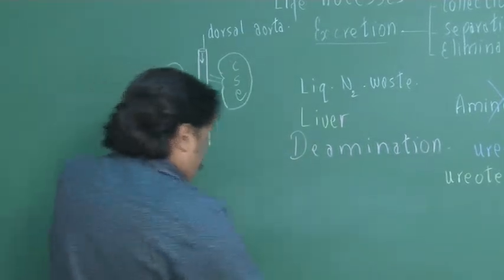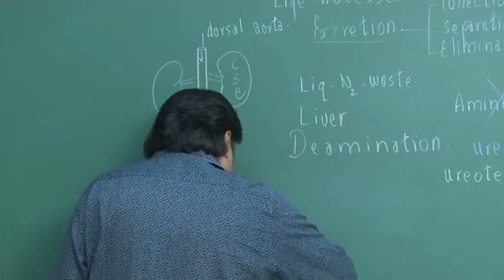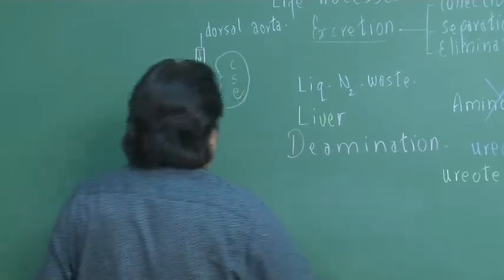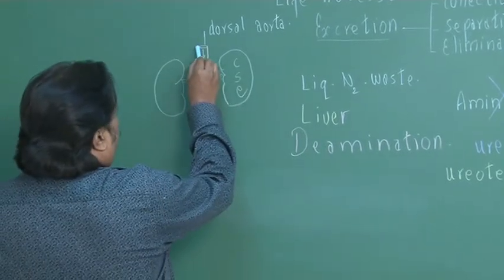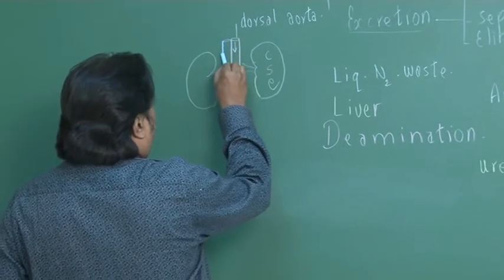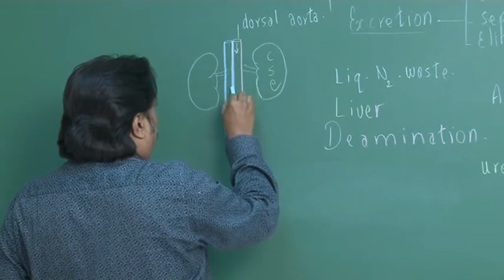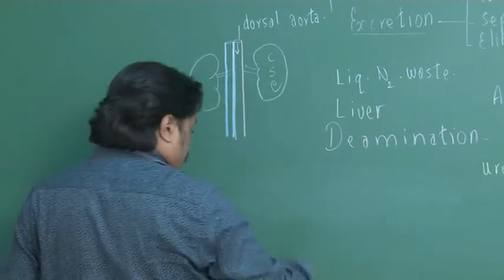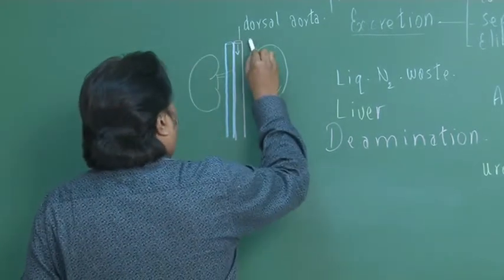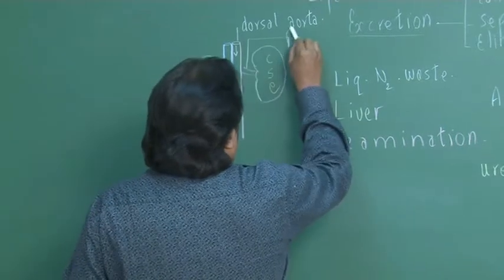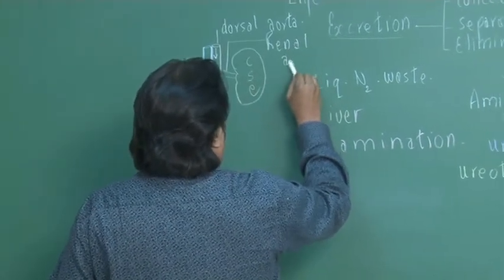Now, any organ gives out carbon dioxide. Yes, that carbon dioxide containing blood will be carried away by the renal blood vessel. See, this blood vessel from the dorsal aorta to the kidney, we call it as the renal artery.